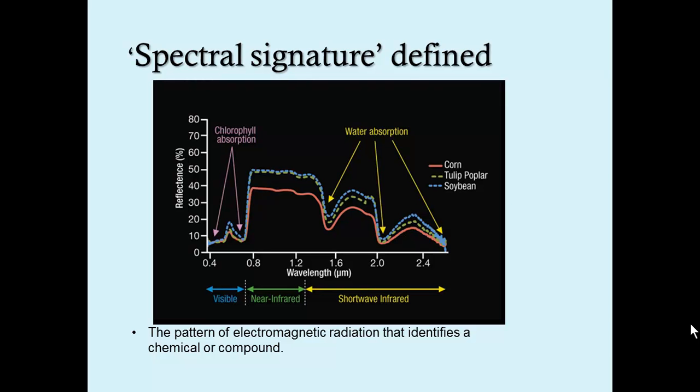The colored curves represent the unique spectral signatures of three different objects with the red line showing corn, the dashed green line showing tulip poplar, and the dashed blue line showing soybean. There are specific areas of the graph that indicate chlorophyll absorption where the reflectance is relatively low and also water absorption where the reflectance is relatively low.